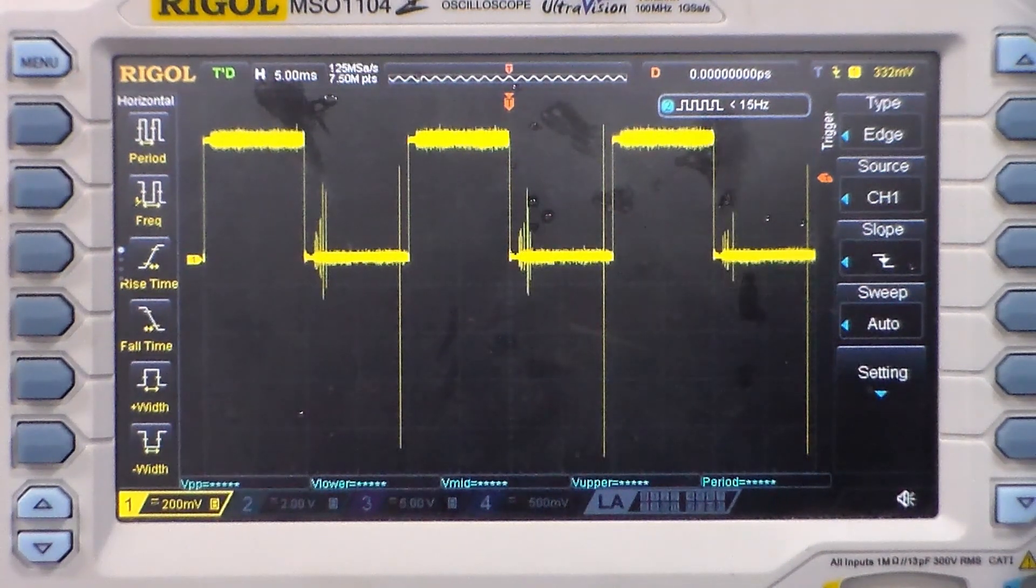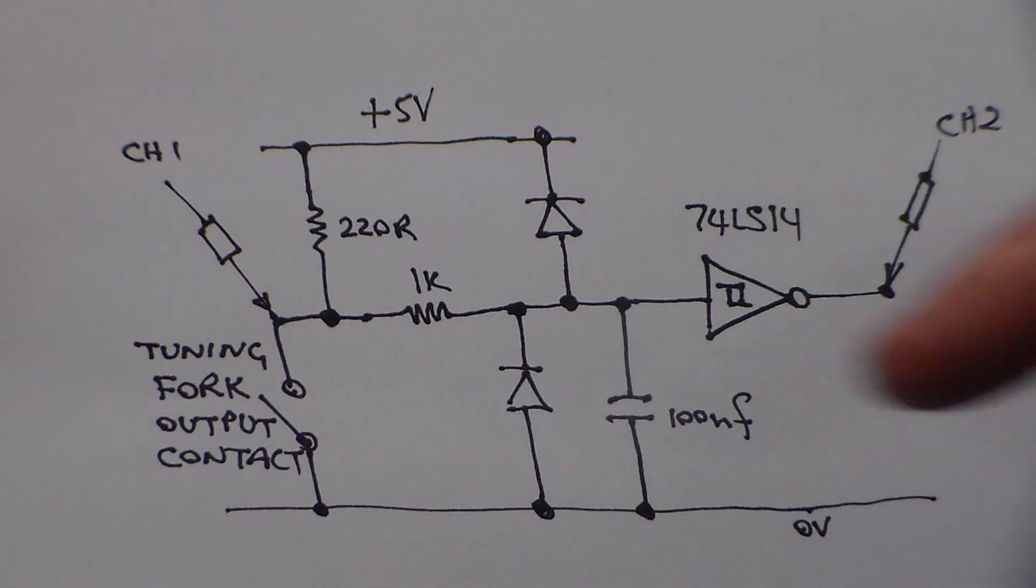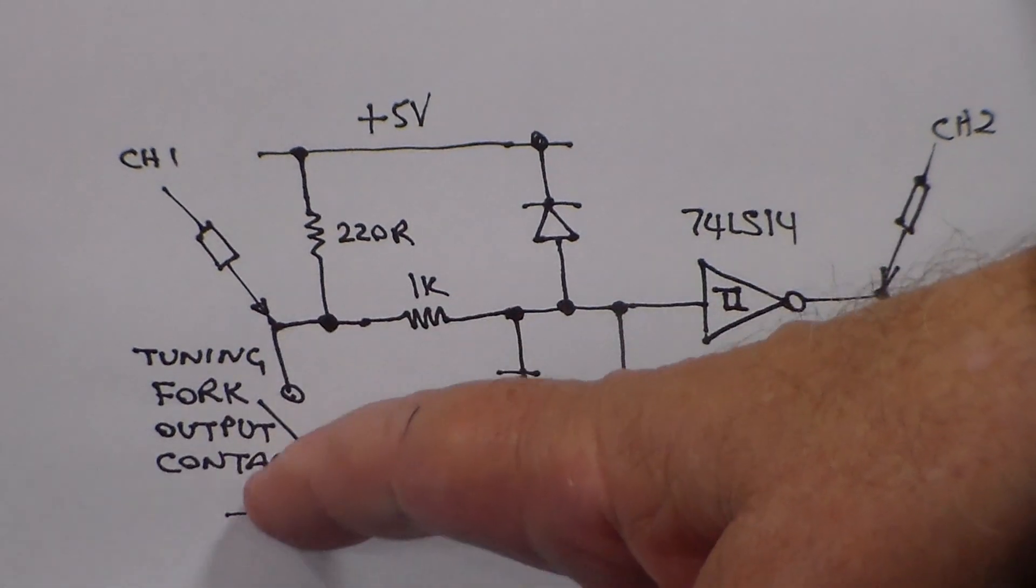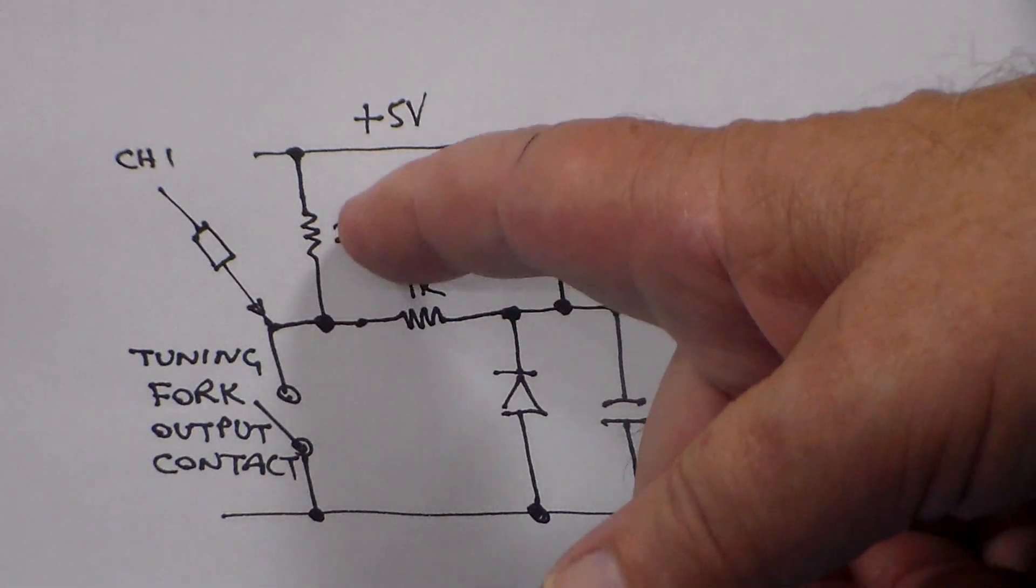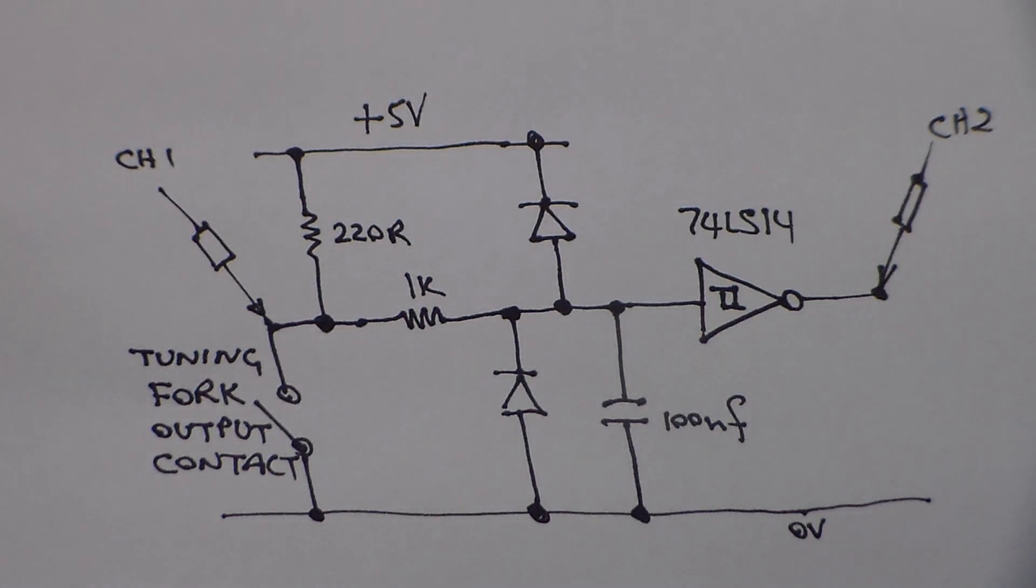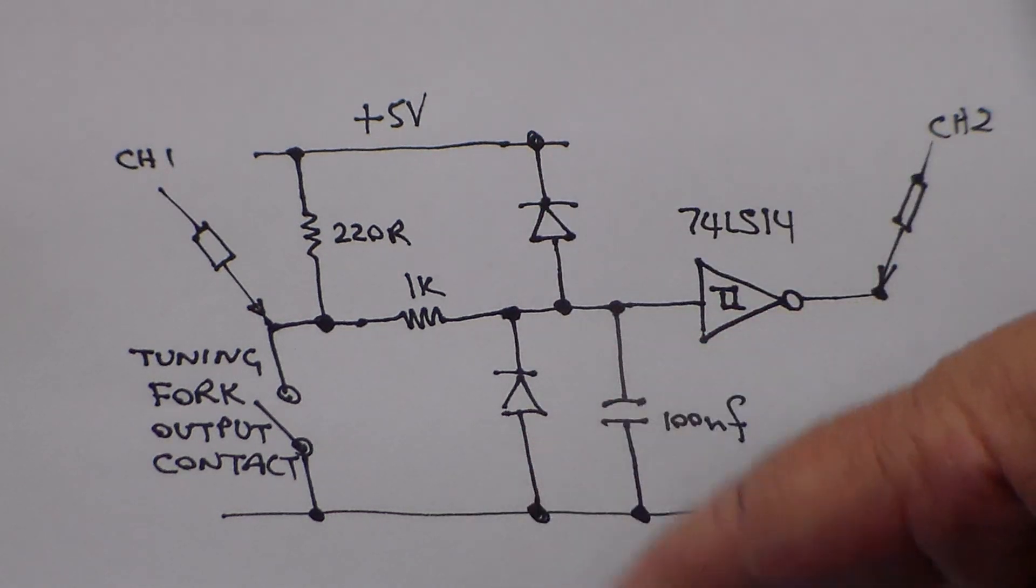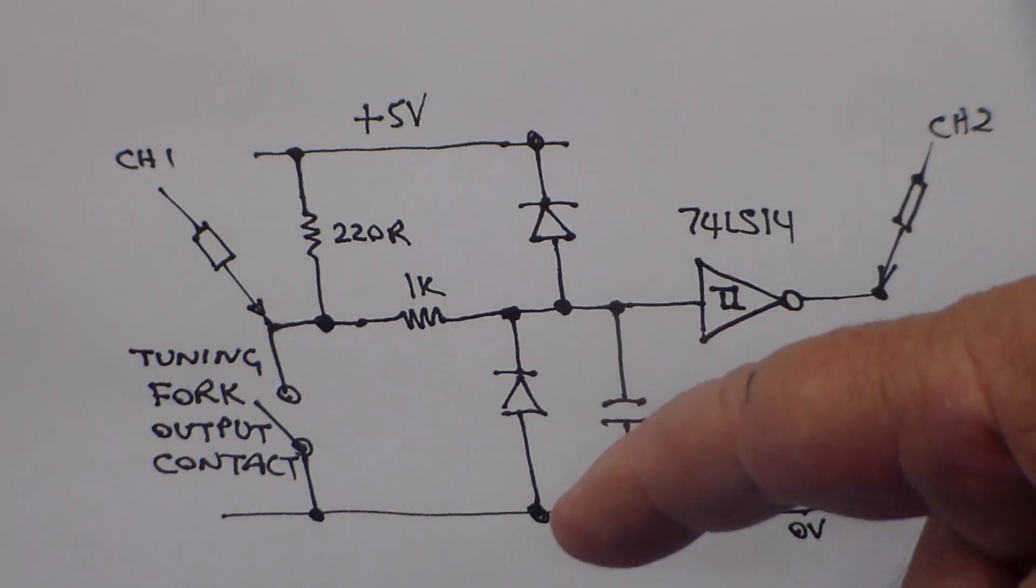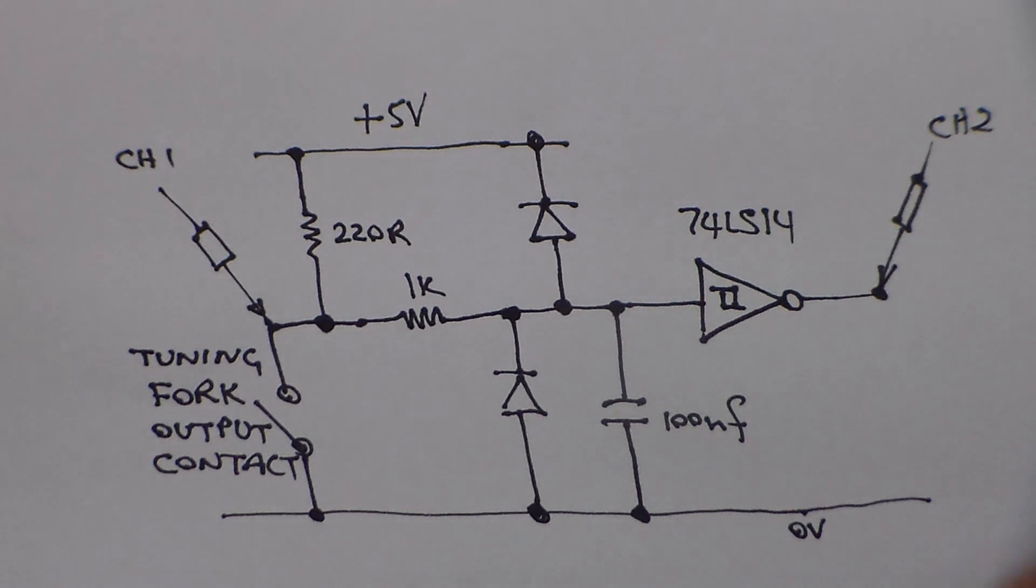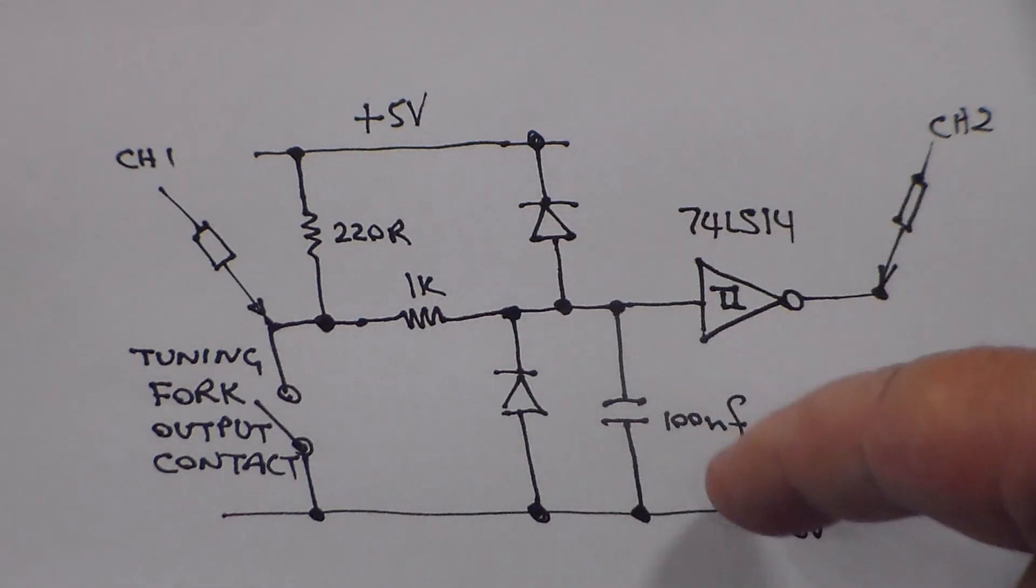So this little circuit just takes the tuning fork output contact here and is pulled up to 5 volts through this 220 ohm resistor. Then we've got a 1k resistor here which serves two purposes: one, to limit the current going into these clamping diodes which clamp the signal to the 0 and 5 volt logic levels; plus the 1k resistor is also part of this RC network to form a low pass filter.